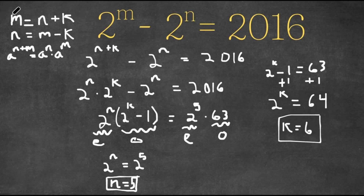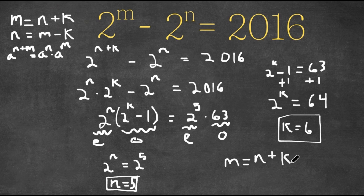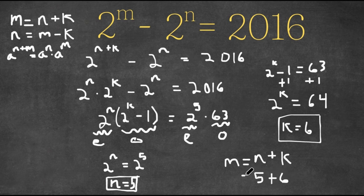So we know that m is equal to n plus k. We already have the values for n and k: n is 5 and k is 6. Meaning m is equal to 5 plus 6, which is 11. So m is 11.